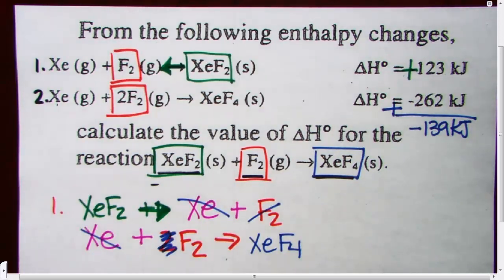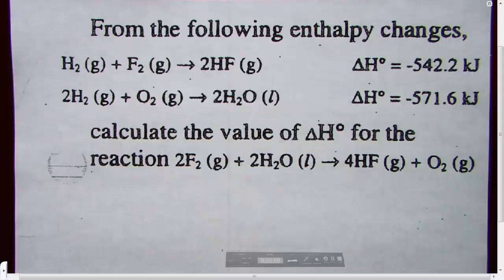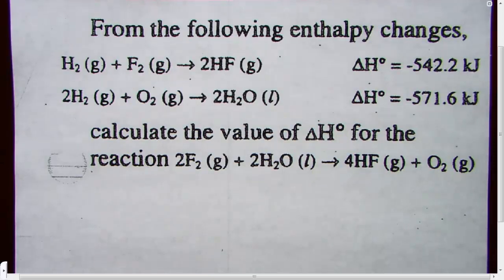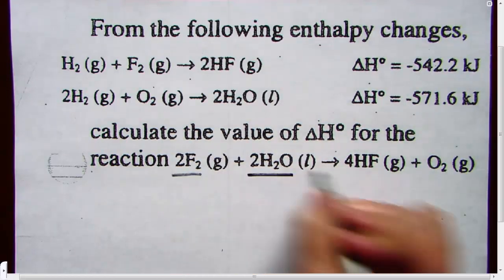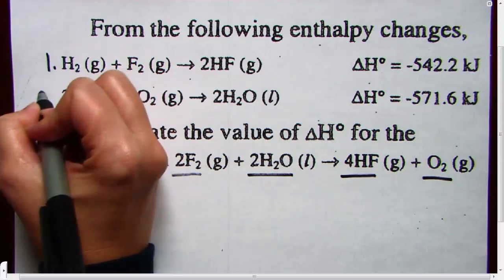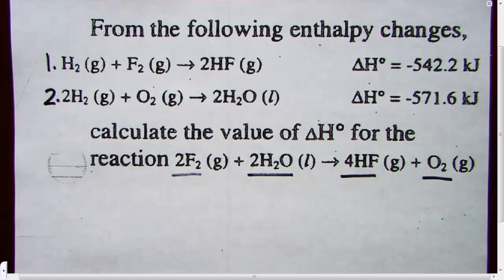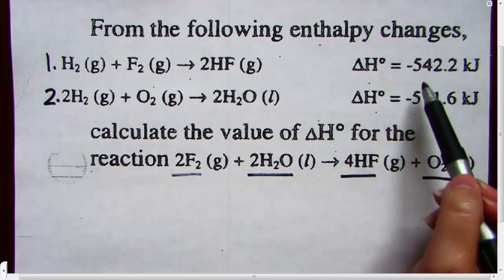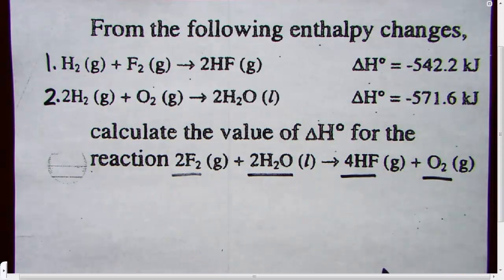Next we will do a little bit more complicated problem. Now you are ready for a little more complicated problem. Let's look at this one. We want a final reaction of 2F2 plus 2H2O yields 4HF plus O2. That is what we want to get. Up here at the top, we've got two reactions. Sometimes you will have 3, 4, even 5 reactions, so just because my examples have happened to have 2, don't assume that there are always 2. And both of these reactions release energy because they have negative kilojoules.